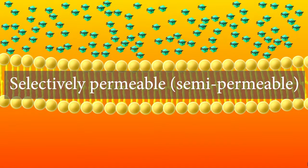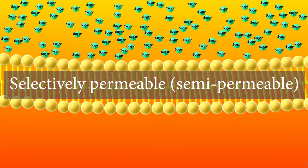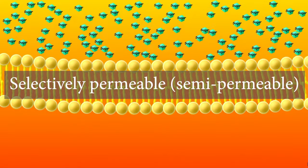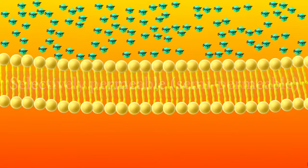The answer is that the cell membrane is selectively permeable, or semi-permeable, which means that it only allows certain things to pass through.